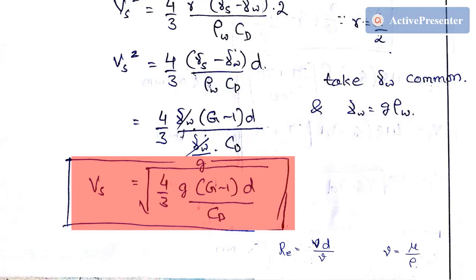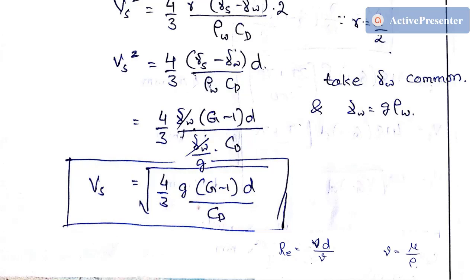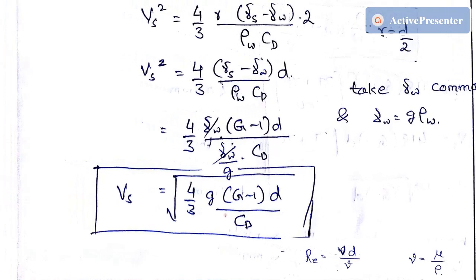The settling velocity equation is: Vs = √[4/3 × g(G − 1) × d / Cd]. The parameters in SI units are: velocity in m/s, g in m/s², G is dimensionless, d in meters. The drag coefficient Cd depends on the flow regime — laminar, turbulent, or transitional — which is determined by the Reynolds number.